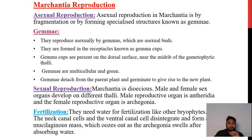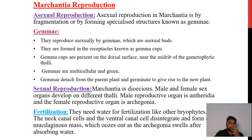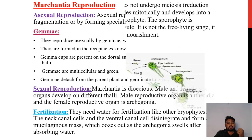In sexual reproduction, Marchantia is dioecious — male and female sex organs develop on different thalli. The male reproductive organ is antheridia and the female reproductive organ is archegonia. They need water for fertilization like other bryophytes. The neck canal cells and the ventral canal cells disintegrate forming mucilage which oozes out as the archegonia swell after absorbing water.